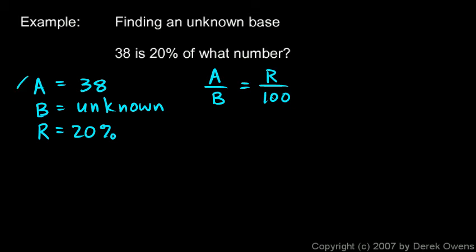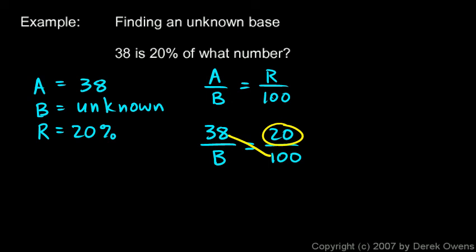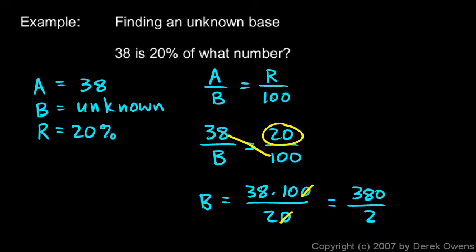Plugging in: a is 38, b is unknown, and r is 20, giving 38/b = 20/100. Using the fast method, b = (38 × 100) / 20. Canceling a zero gives 38 × 10 / 2 = 380 / 2 = 190. So 38 is 20% of 190.